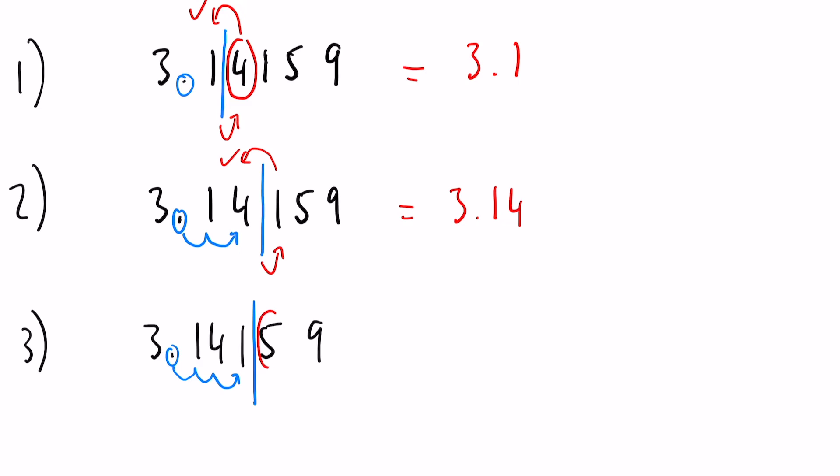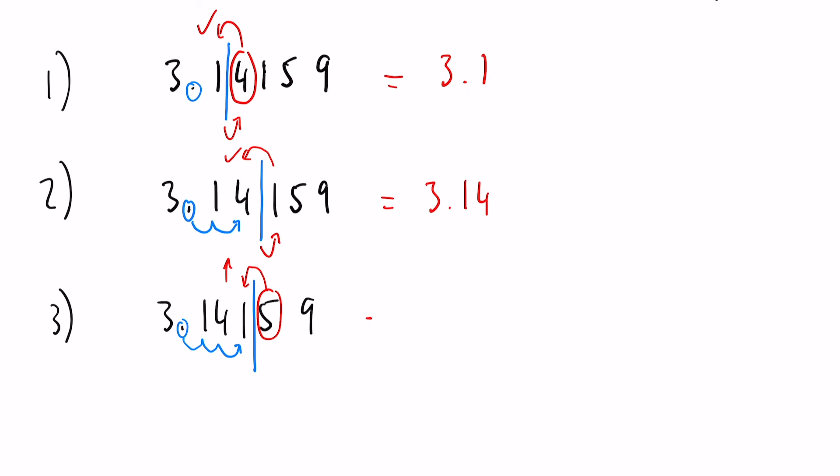Now this time, the 5 indicates that the number 1 will go up by a number, so that 1 will become a 2, leaving us with 3.142.